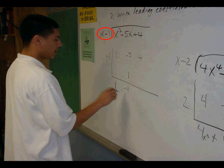And following Alex's method, came up with 1 and negative 4 below, meaning that the answer, or quotient, is x minus 4.